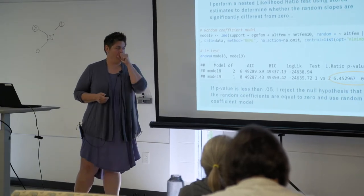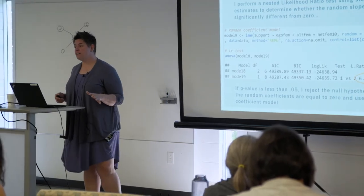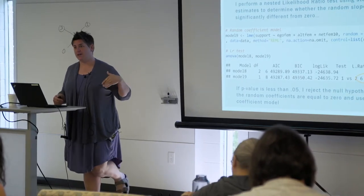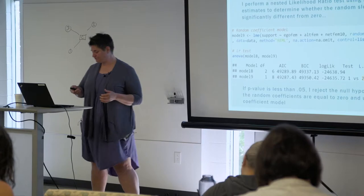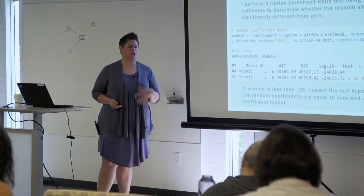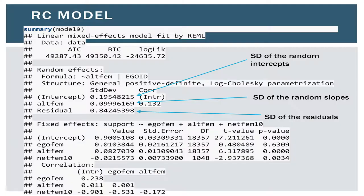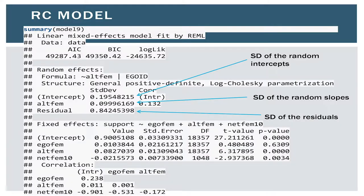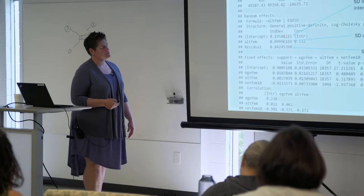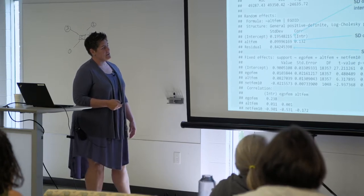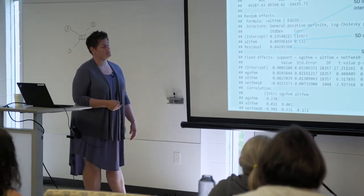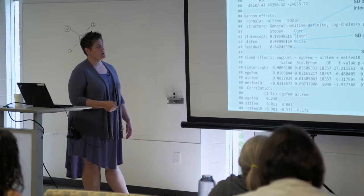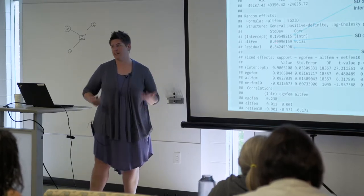If the p-value is not significant, you can run the random intercept model because there is no systematic variation in the effects of that independent variable across egos. So this just tells you from the start whether you need to do this. Then we run the random coefficient model. You'll see some more parameters of interest: the standard deviation of the random intercepts as before, now the standard deviation of the random slopes, and the standard deviation of the residuals. We have an extra parameter in here and we're getting information about how much variation there is.